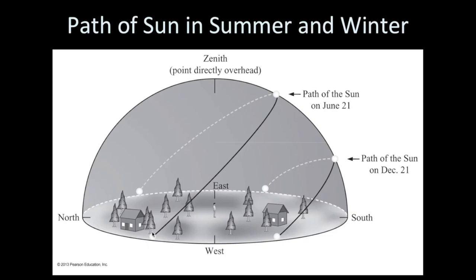When the Sun gets to its highest point in the sky, it is above the southern horizon and not directly overhead. On the winter solstice, December 21st, the Sun's path takes it so that it rises south of east, gets high in the southern sky, and then sets south of west. It will spend less than 12 hours above the horizon on this day.